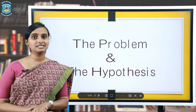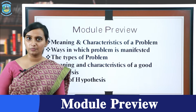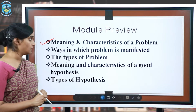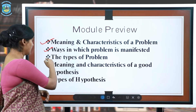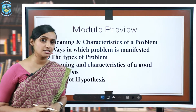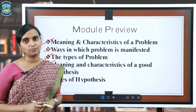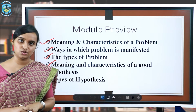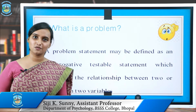Hello, all. Welcome to the BSS eContent page. In today's topic, we'll be taking up the problem and the hypothesis. In today's module, we will be covering the meaning and characteristics of a problem, the different ways a problem can be manifested in research, the different types of problem statements, and the types and characteristics of a good hypothesis found in scientific research. My name is Sujike Sunny, and I'm an assistant professor in the Department of Psychology from the Bhopal School of Social Sciences.